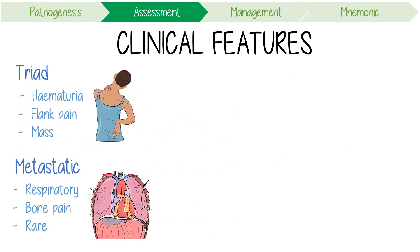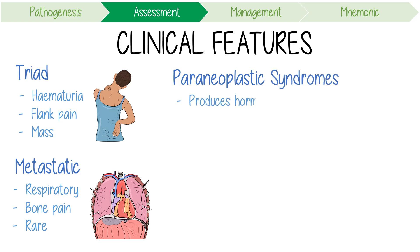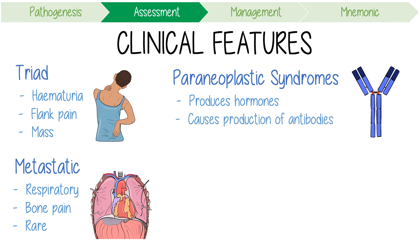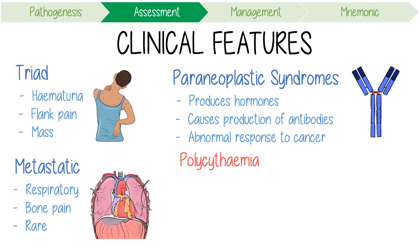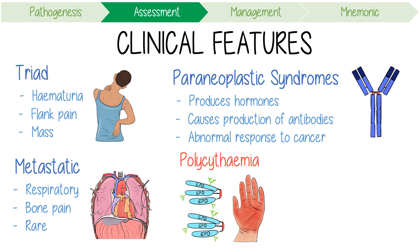Around 25% of renal cell carcinomas will develop paraneoplastic syndromes. These are a group of disorders that occur when a cancer produces hormones itself or causes the production of antibodies that can act like hormones in an abnormal response to the cancer. One common example is polycythemia, or lots of red blood cells. This is mediated by inappropriate erythropoietin production from the cancer, and can cause lots of clotting and erythromelalgia, which can make your hands pink with a burning sensation.